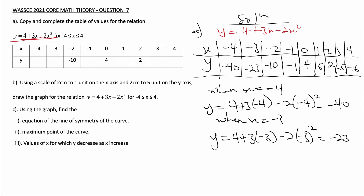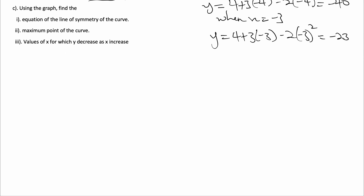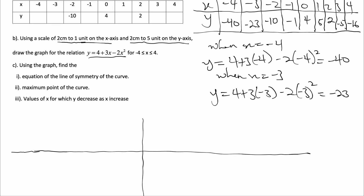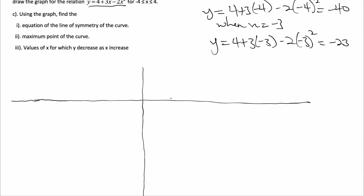That completes question 7a. For 7b, using a scale of 2 centimeters to 1 unit on the x-axis and 2 centimeters to 5 units on the y-axis, let's draw our graph. On the x-axis we mark 1, 2, 3, 4 and minus 1, minus 2, minus 3, minus 4.